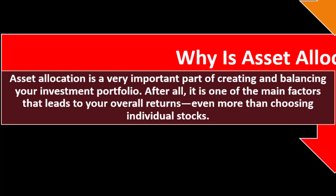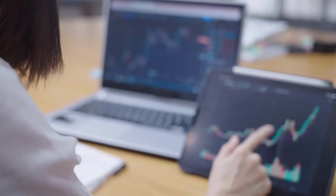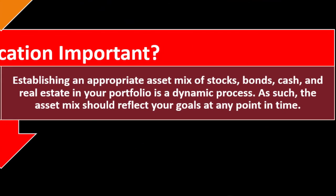Financial media shows often try to find creative ways to discuss strategy, but diversification and balanced asset allocation remain the core answers. Establishing an appropriate asset mix of stocks, bonds, cash, and real estate in your portfolio is a dynamic process. The asset mix should reflect your goals at any point in time, adjusting as your circumstances change.